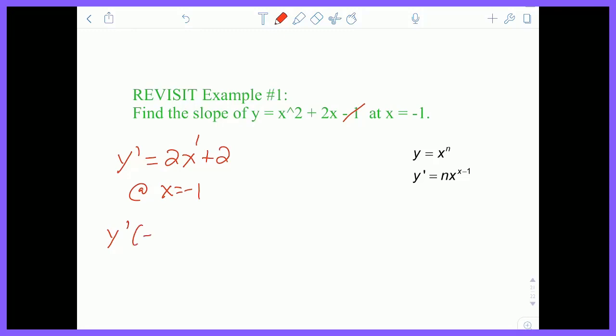So if you actually had to plug in x equals negative 1, you get that y prime of negative 1 is equal to 2 times negative 1 plus 2, which is equal to 0 like we saw when we did the problem out longhand.